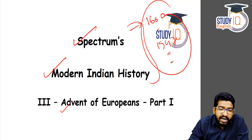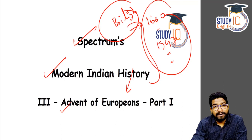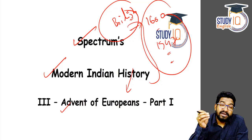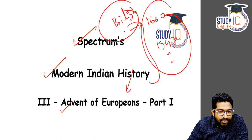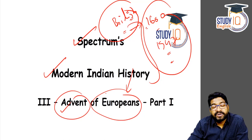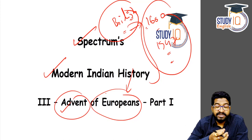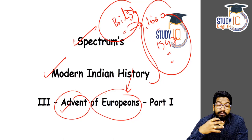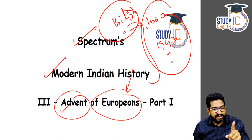But first we need to understand how the British arrived. Before the British, many other Europeans came to India. The British first defeated some Indian kingdoms, then defeated European challenges like the Portuguese, the Dutch, and the French, and eventually consolidated rule in the subcontinent. So how did the Europeans arrive, and why? Who was the first European power to come to India, and why couldn't they rule India if they had a head start?